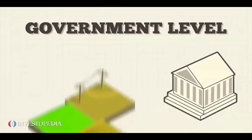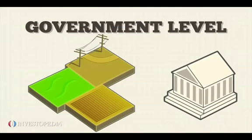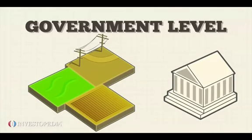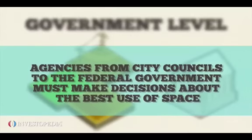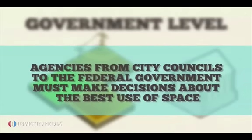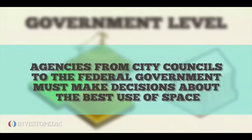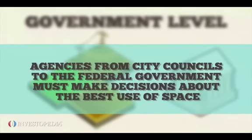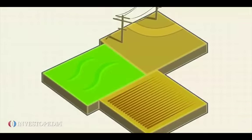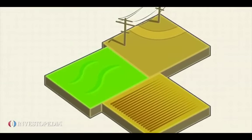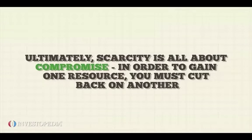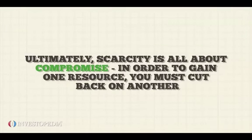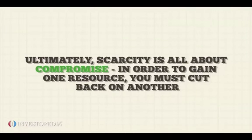On the government level, land is an example of a scarce resource. With only so many square miles of usable land available, agencies from city councils to the federal government must make decisions about the best use of space. Land turned into a park is land that cannot be used for roads or houses. Ultimately, scarcity is all about compromise — in order to gain one resource, you must cut back on another.